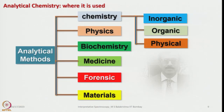In chromatographic methods, we measure the physico-chemical properties of individual analytes after separation. In thermal methods, we examine the physico-chemical properties of the sample as it is heated and cooled — that is, what happens to a sample with temperature variation. These analytical techniques are used in all disciplines of science: chemistry, physics, biochemistry, medicine, forensic science, and materials — including inorganic, organic, and physical chemistry.